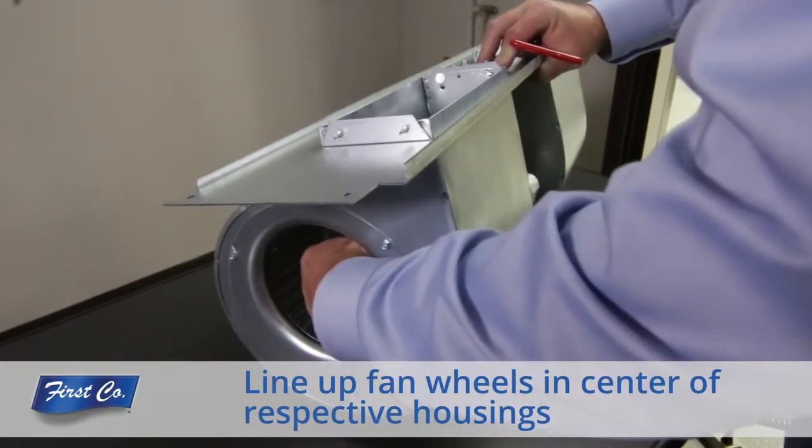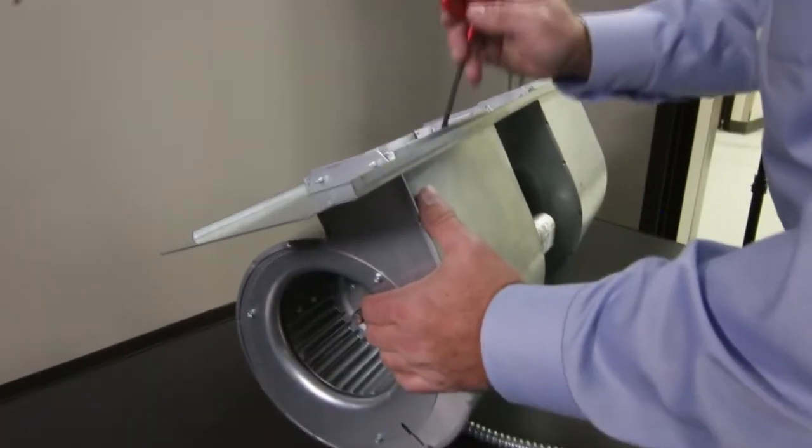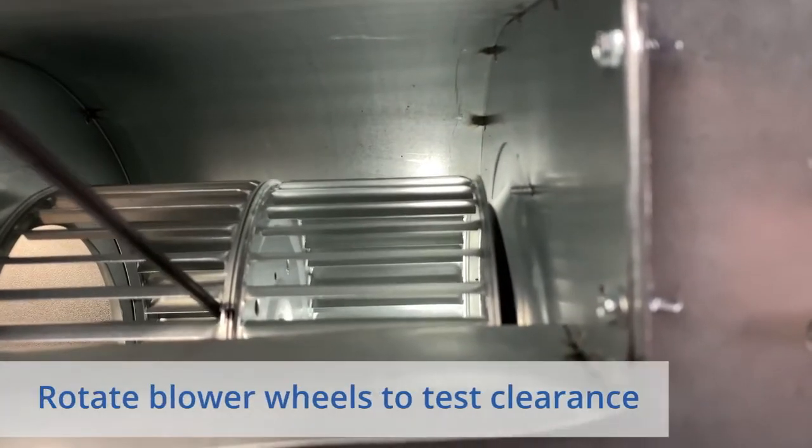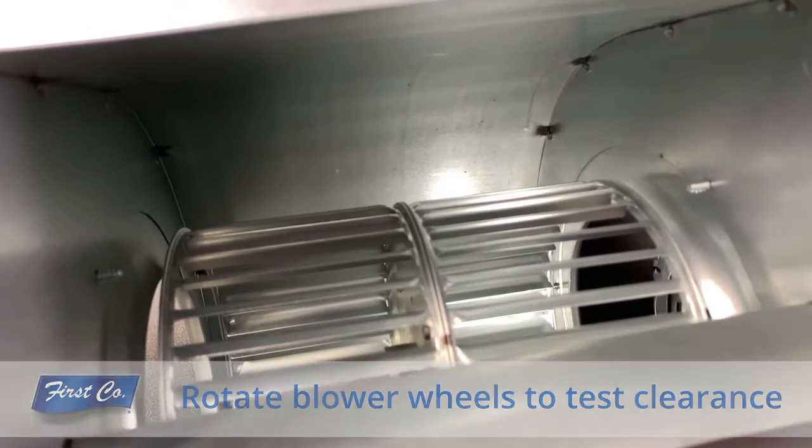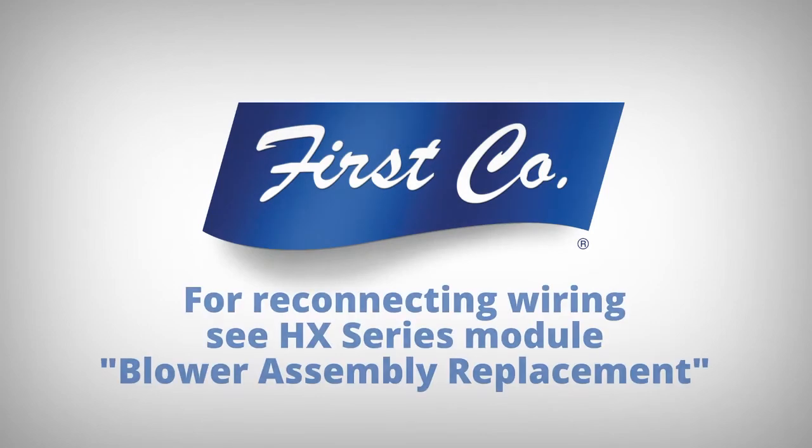Line up the two fan wheels in the center of the respective housing and using the T-handle Allen wrench, tighten down on the set screws. Rotate the blower wheels to make sure they are rotating freely and not rubbing on the housing. Refer to the blower housing removal and replacement video for more details on reconnecting the wiring.